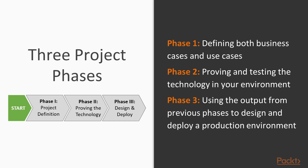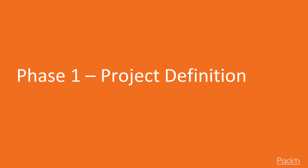Let's start by outlining the three project phases. In phase 1 we'll look at the project definition, where we'll look at the business elements and identify business and use cases. In phase 2 we'll start to prove the technology and test the solution within your environment. And in phase 3 we'll look at deployment and designing for production.